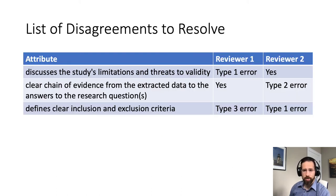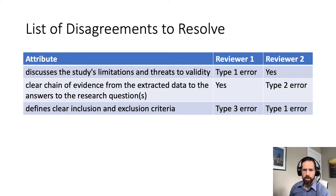Enter the reconciler. The reconciler receives the paper and the list of disagreements between reviewers 1 and 2. The reconciler's job is to resolve the disagreements. The reconciler can read the paper, talk to the reviewers, or talk to the authors. But one way or another, all disagreements must be resolved. If the reviewers can't agree, the reconciler makes the call. The reconciler does not write an essay or meta-review, does not introduce new criticism, and does not recommend a decision. The reconciler just resolves disagreements.